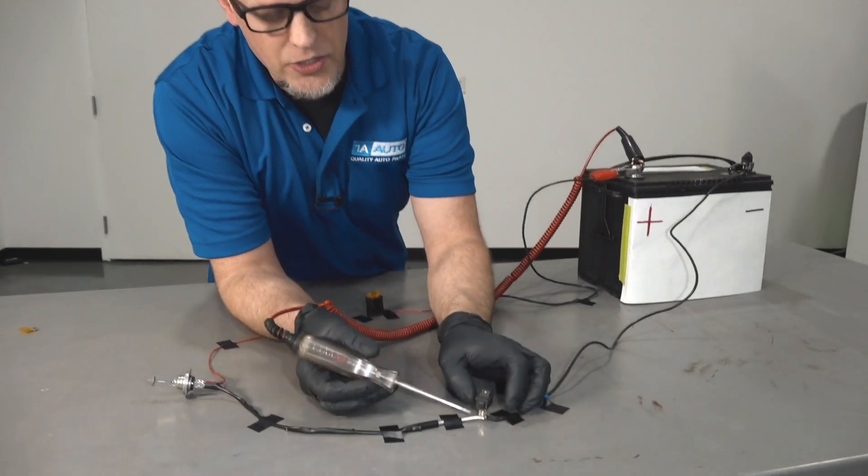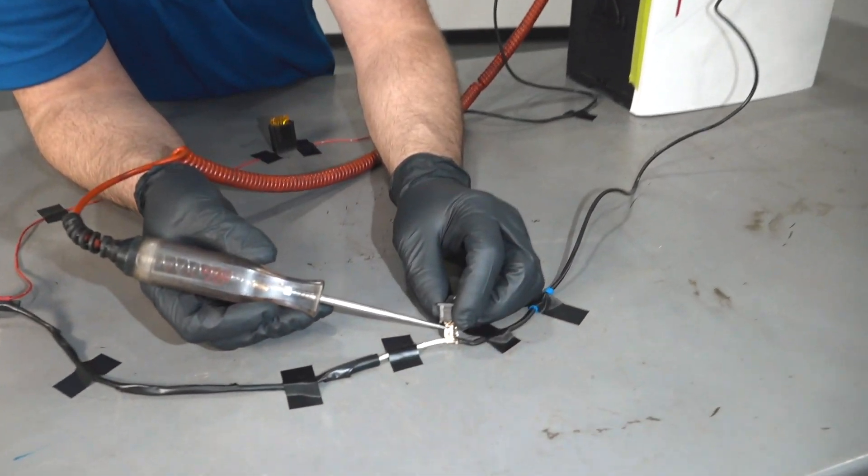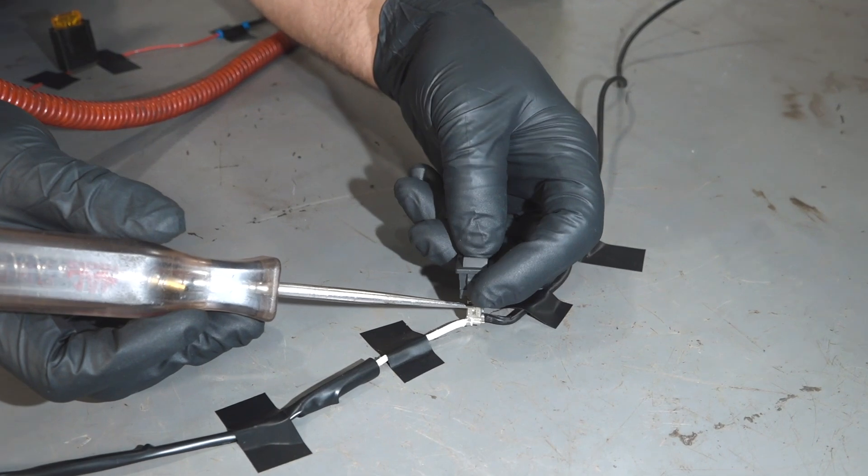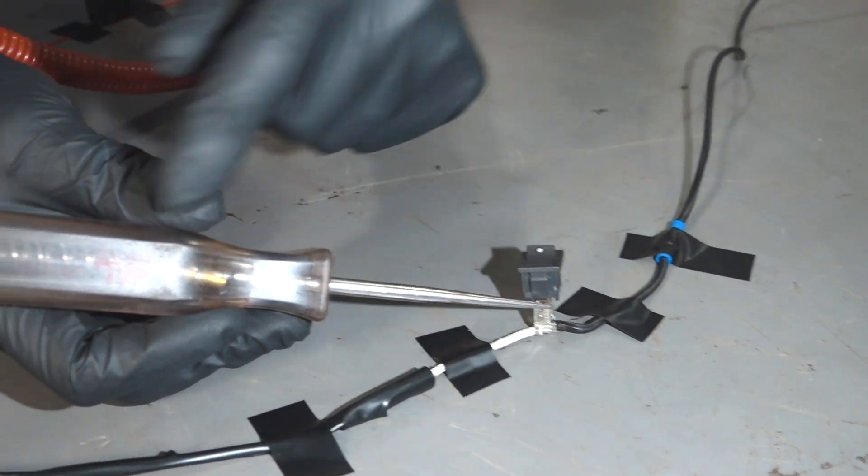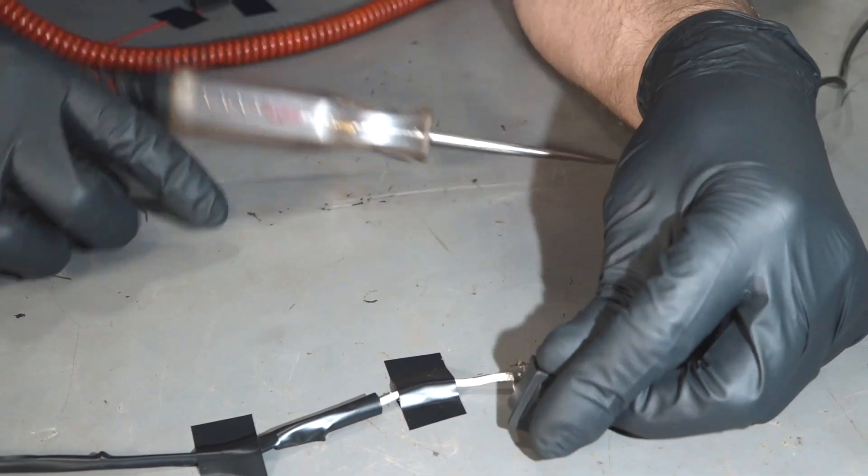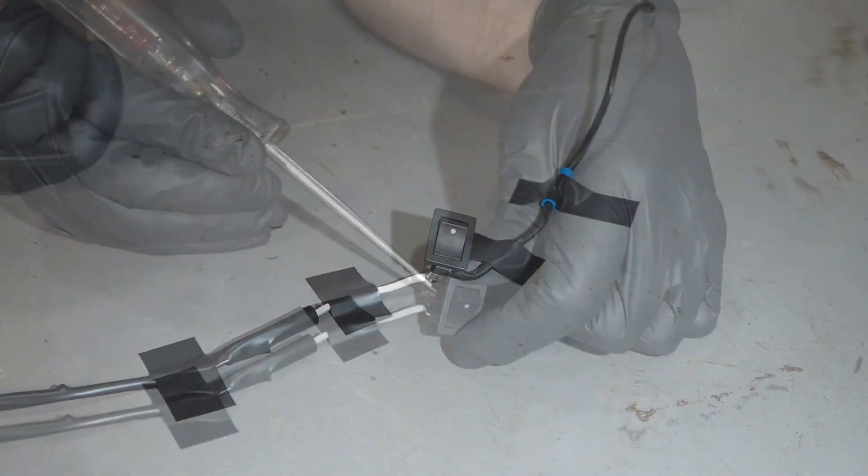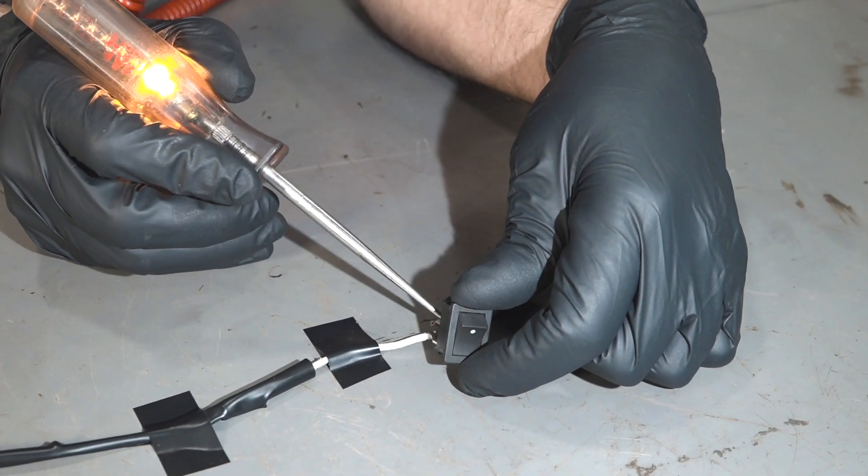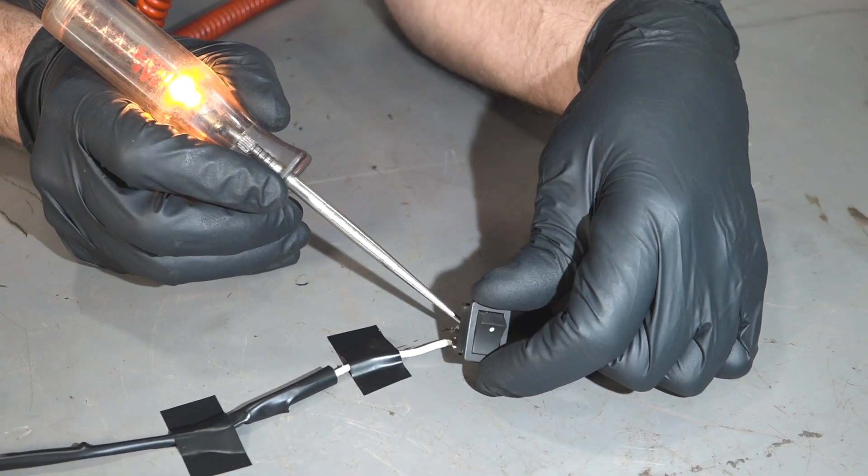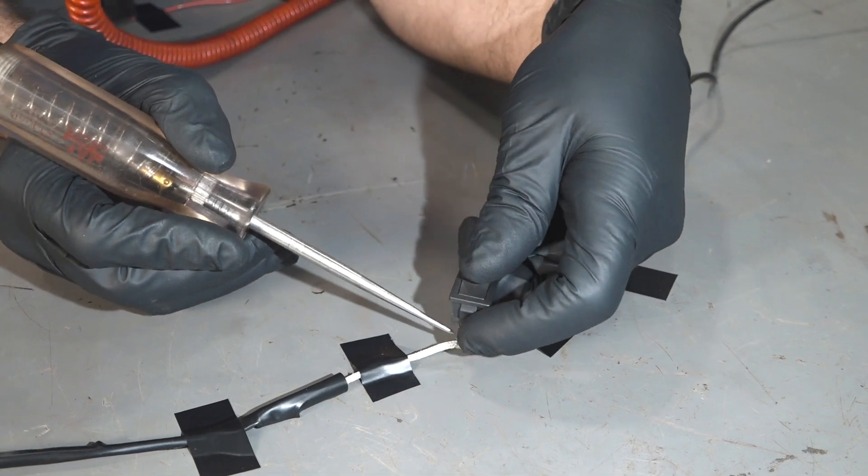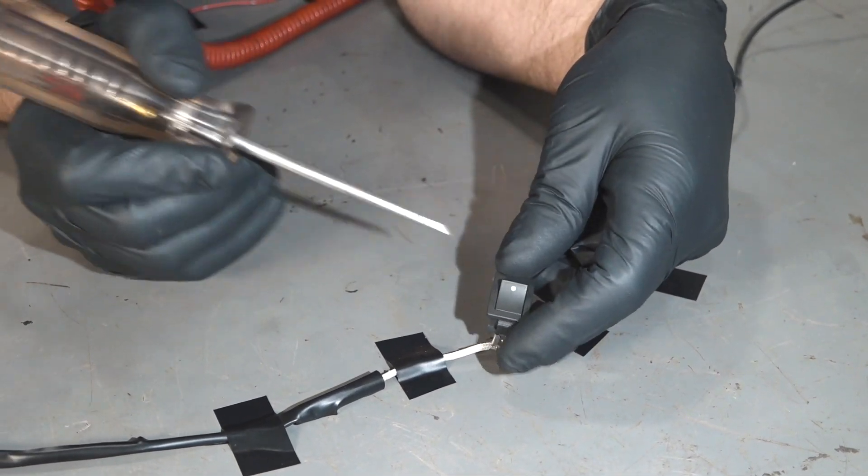If we test the switch right here with the test light and activate the switch and the test light does not light up, as long as there is a ground on this side coming into the switch like that, if we have the ground coming into the switch, but when you toggle the switch, it doesn't come out, then the switch is going to be bad.